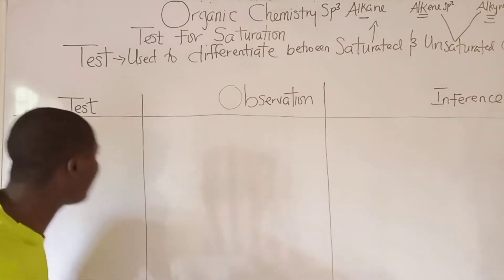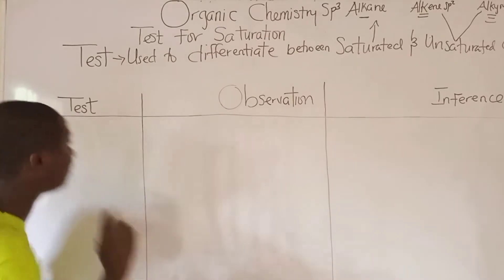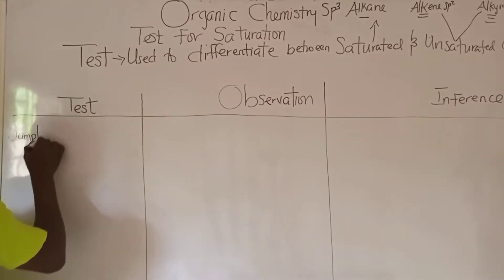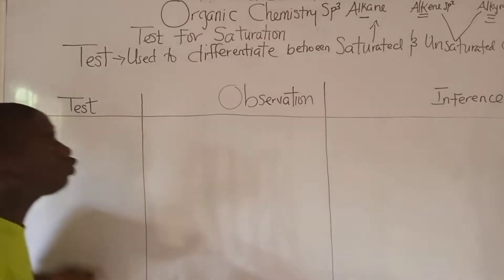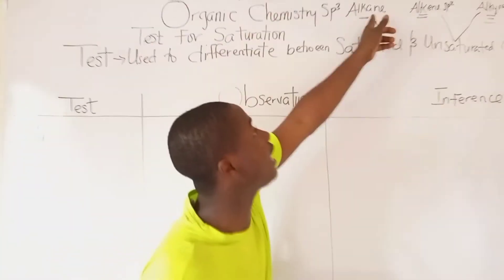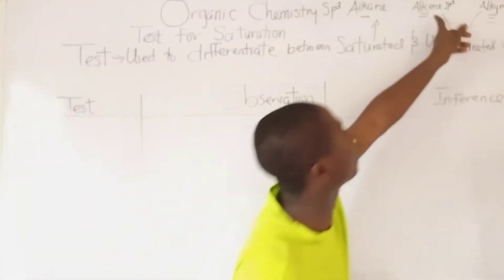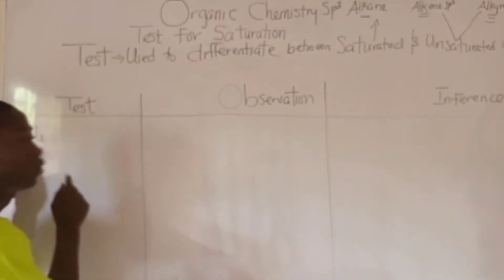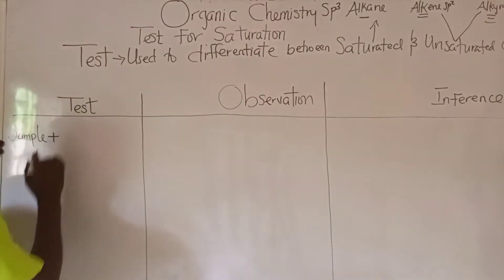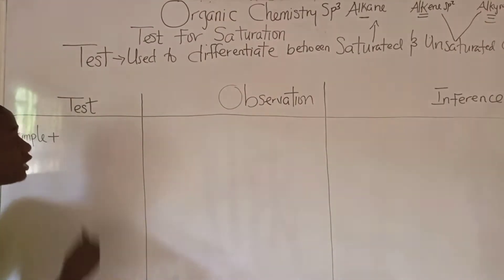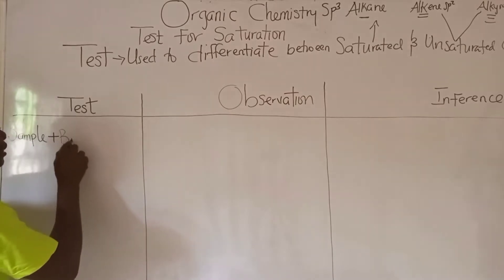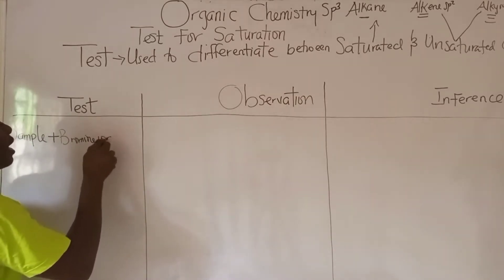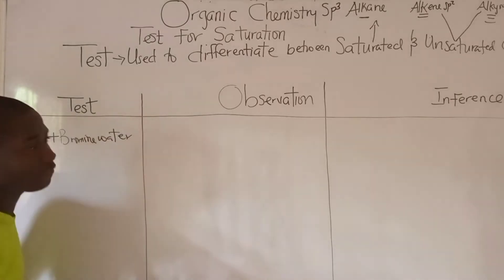Let's say we are given an unknown sample, and we don't know if this sample is an alkane, an alkene, or an alkyne. Let's say this unknown sample reacted with bromine water. What becomes the observation?